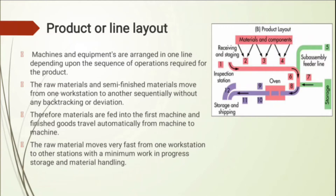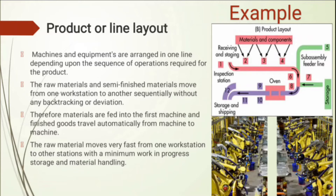This type of layout is generally used in the automotive sector for assembling products. You can see the example of the product layout in which materials and components are received and staged, then pass through workstations, assembly or feeder lines, oven operations, storage, and shipping. The product flows in a very linear and sequential manner.